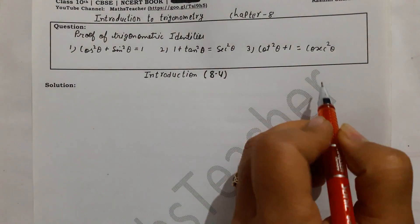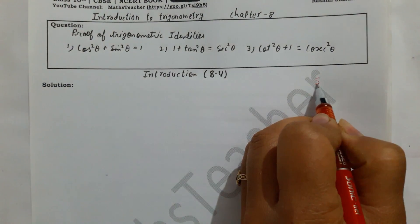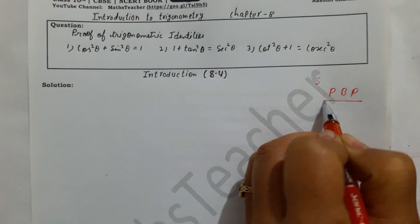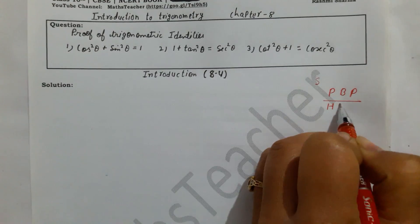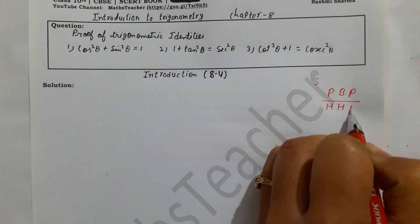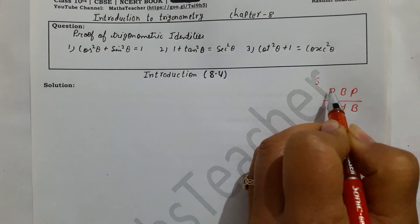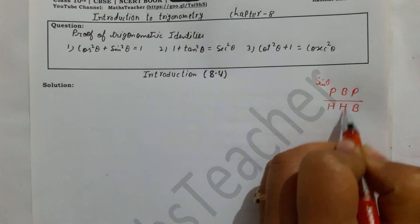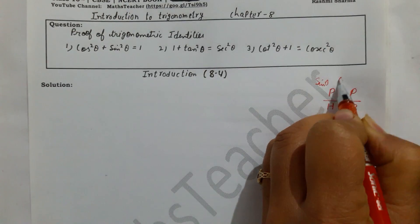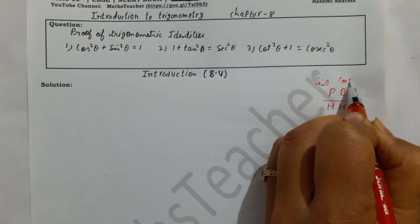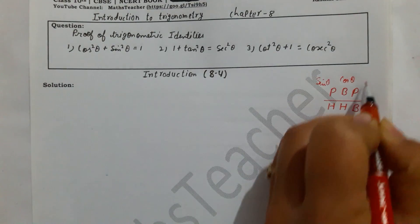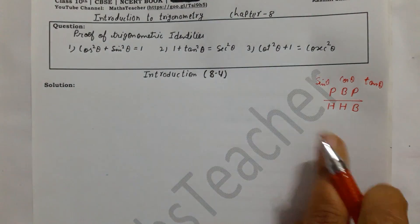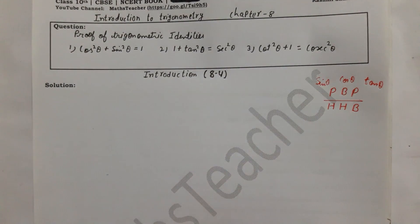Using the mnemonic 'Pandit Bholy Prasad, Har Har Bholy': sin θ = P upon H (Perpendicular over Hypotenuse), cos θ = B upon H (Base over Hypotenuse), tan θ = P upon B (Perpendicular over Base). Remember this ratio to recall the introduction to trigonometry.